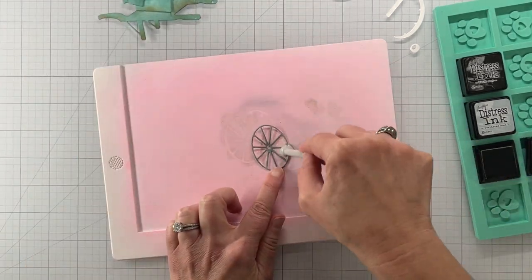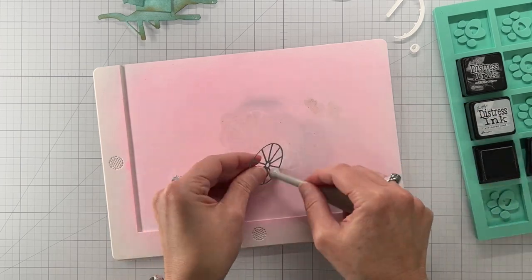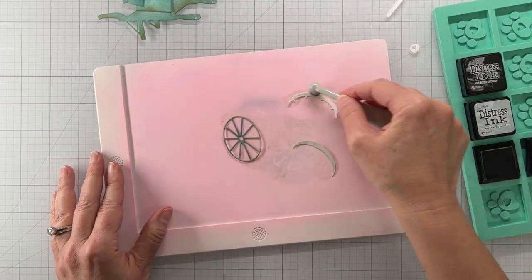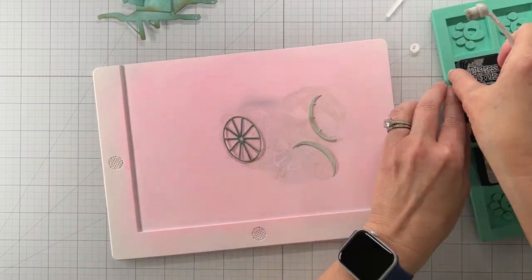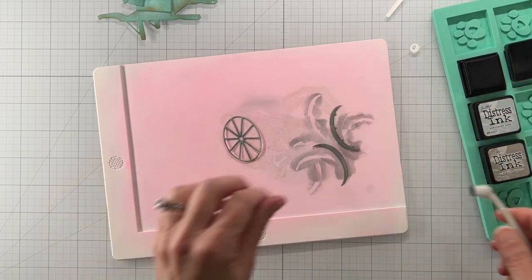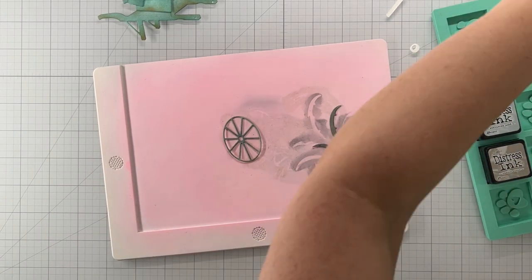So for my wheel I'm using different grays and for the tires I'm even going to come in with some black and again just coloring all of the elements before I start assembling them.